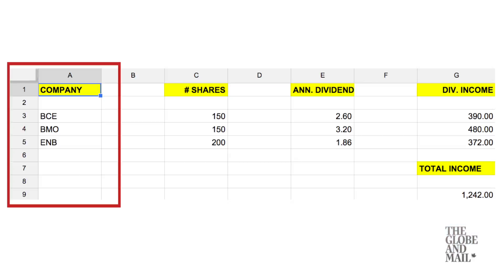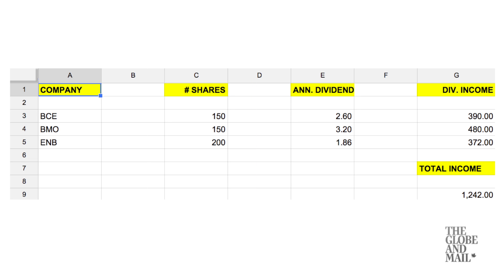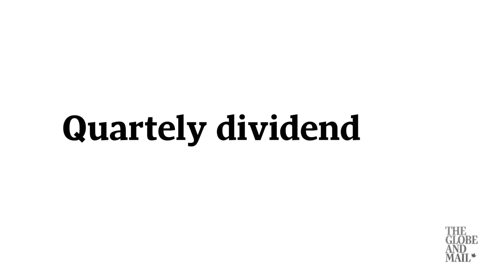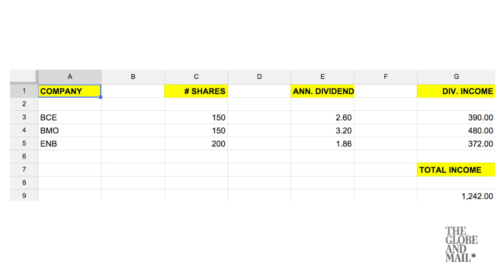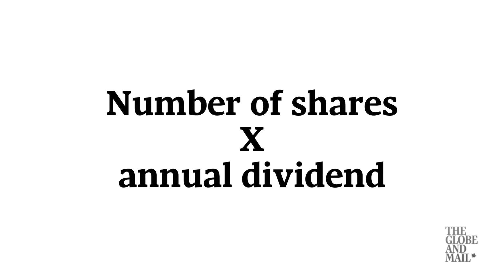In the first column I've got the stock symbols. In the second column I've got the number of shares owned — I just made these up, by the way. In the third column I've entered the company's annual dividend, which is its most recent quarterly payment multiplied by four. And in the final column it's the annual dividend from each stock, which is the number of shares multiplied by the annual dividend.